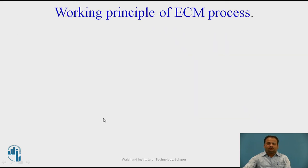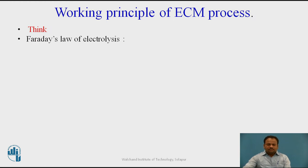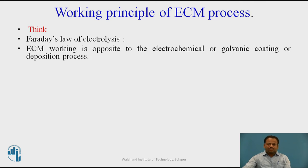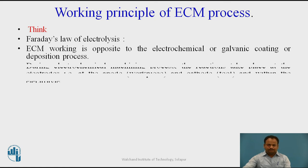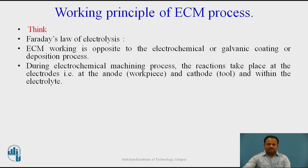Now we will see the working principle of the Electrochemical Machining process. This ECM works on the principle of Faraday's Law of Electrolysis. ECM working is opposite to the electrochemical or galvanic coating or deposition process — here, material is removed, whereas in electroplating we add material. The reaction takes place at the electrodes: at the anode (work piece) and at the cathode (tool) and within the electrolyte.